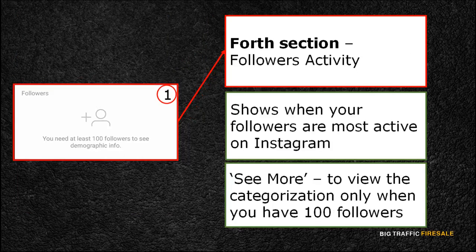The last section is the Followers Activity. This bar chart shows you when your followers are most active on Instagram. You can even tap the See More icon to view the categorization. You have information of your followers' gender, age, and even location. Plus, you have a bar chart of probability on when your users are most likely to log in hourly and, of course, daily.